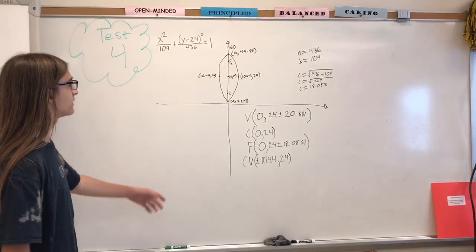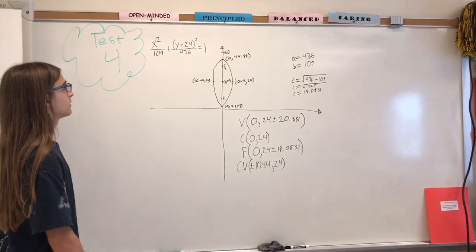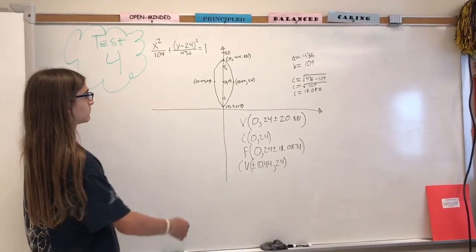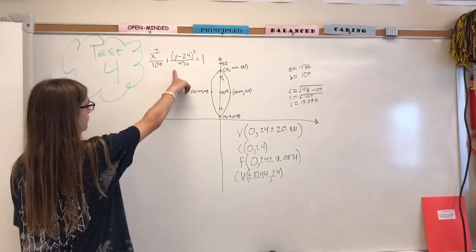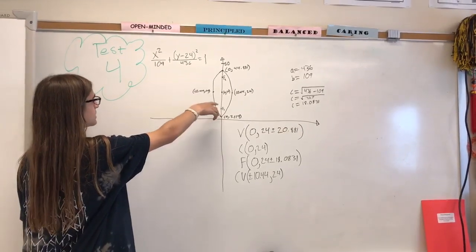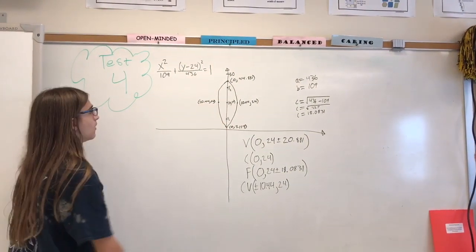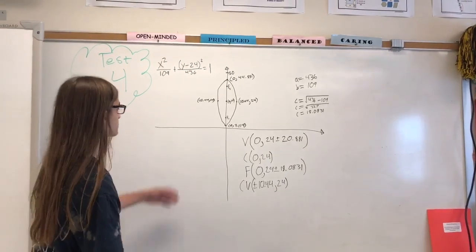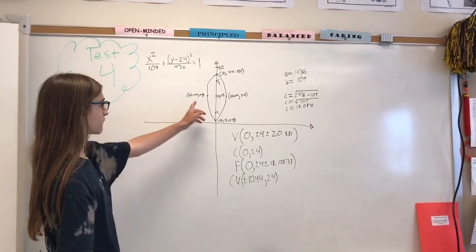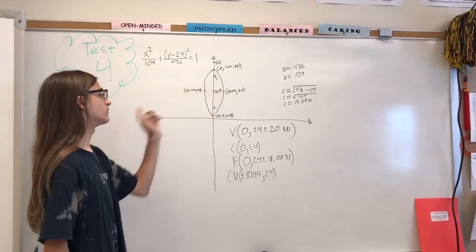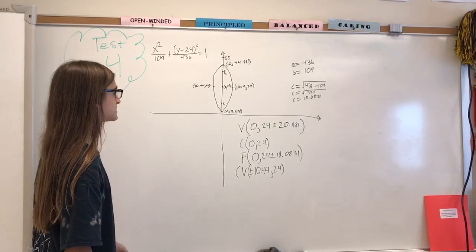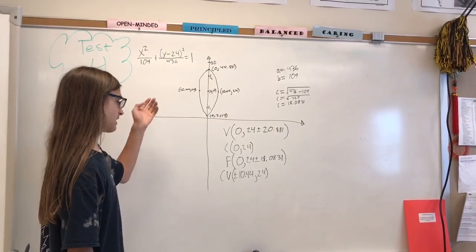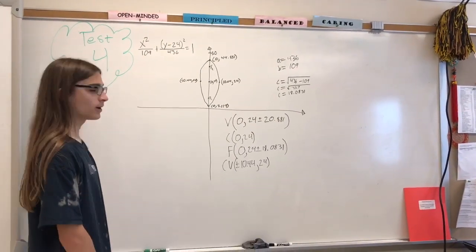This is the graph of the equation we determined. The center is at (0, 24). It extends by the square root of 436 up and down from the center along the y-axis, meaning it will never touch the x-axis. The covertices extend by the square root of 109, approximately 10.44, from the center along the x-axis. The foci are along the y-axis at 24 plus or minus approximately 18.08.